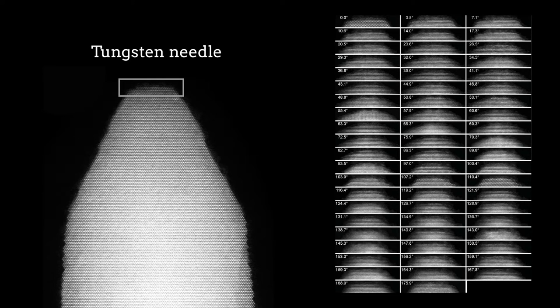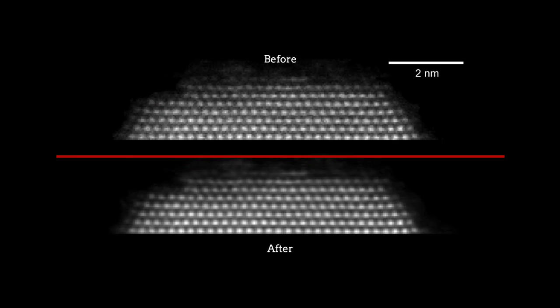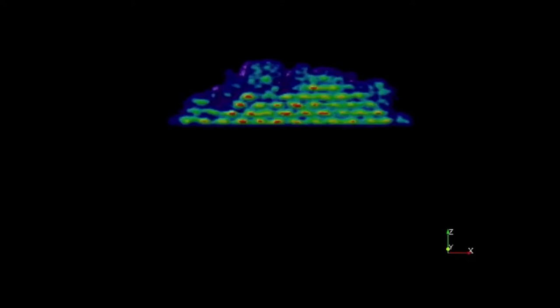Before the snapshots were combined into a single 3D image, they were corrected for stray movements of the sample and other distortions during imaging. The images were then reconstructed using two different methods for reducing noise.